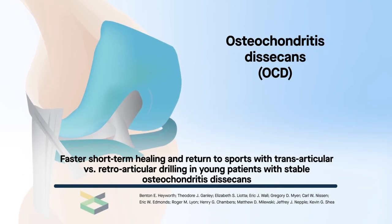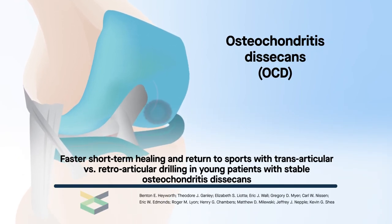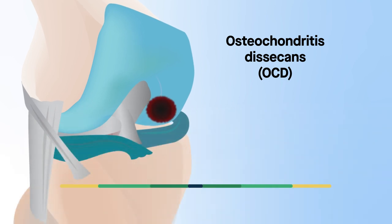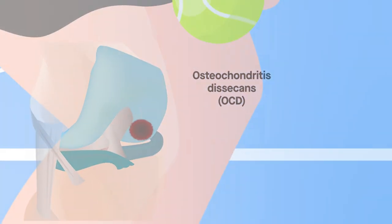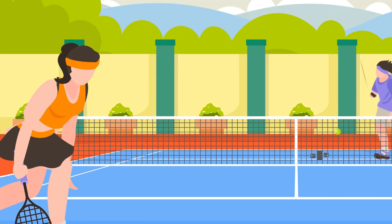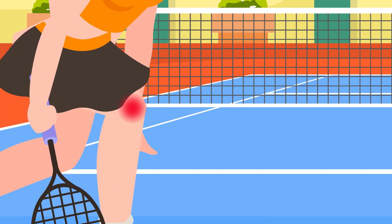Osteochondritis dissecans, or OCD, is a joint condition in which a focal area of subchondral bone and cartilage becomes unhealthy and risks separation from the surrounding bone and joint surface. Most often observed in the knees of children and adolescents, this condition can result in knee pain, swelling, and instability that can, in turn, lead to premature osteoarthritis.